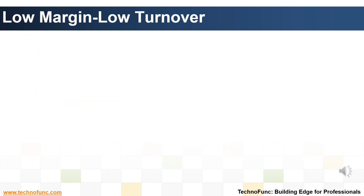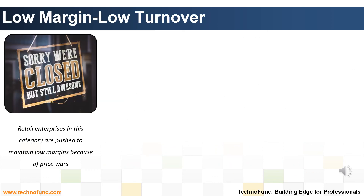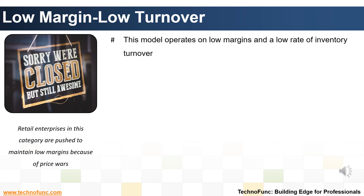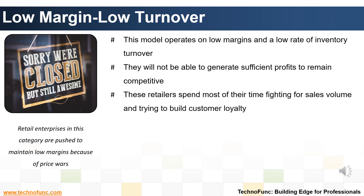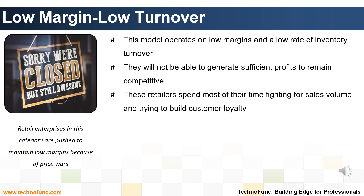The fourth model — low margin, low turnover — describes retail enterprises that are pushed to maintain low margins because of price wars. Compounding this problem is the low volume of sales, which is probably a result of poor management, unsuitable location, and similar issues. Such businesses normally get wiped out over a period of time. These retailers spend most of their time fighting for sales volume and trying to build customer loyalty.